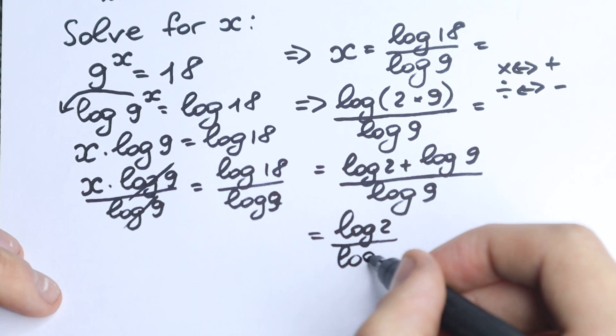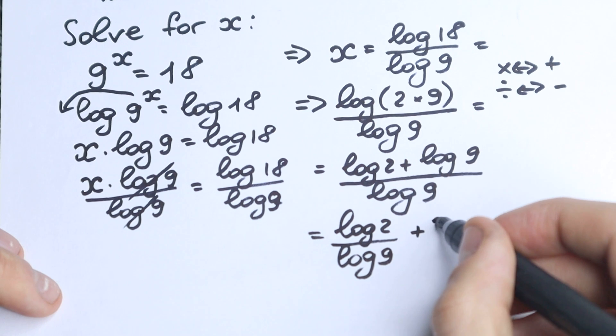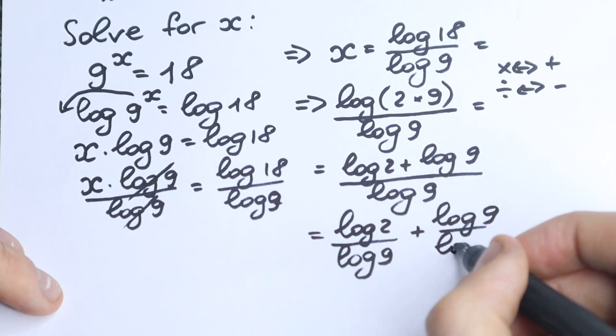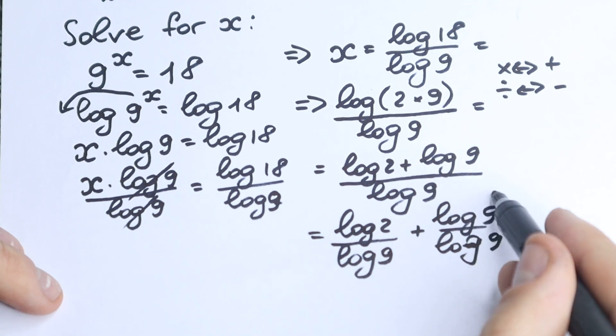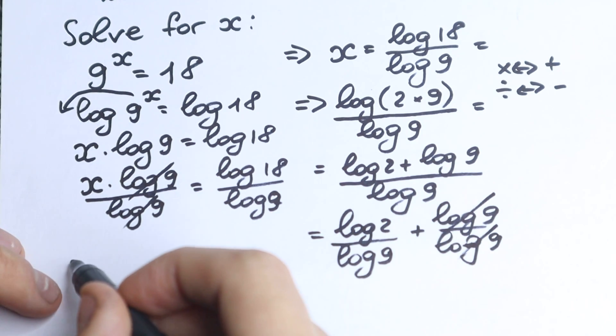...over log(9), plus log(9) over log(9), which implies that we have 1 here because we divide the same elements—log(9) and log(9). Let's write our answer.